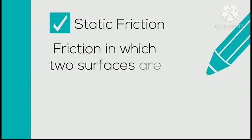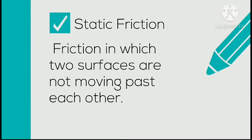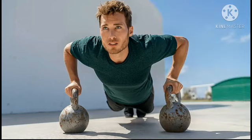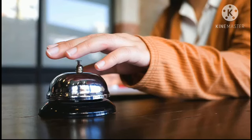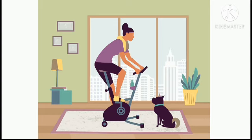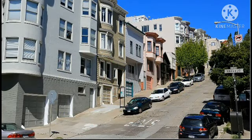Static friction is the friction that occurs between the surfaces of non-moving objects. You see these door barriers on the ground — they are not moving, so they have static friction. The bell on the table is not moving, so it has static friction. The gym machine has static friction because it is not moving from its position. A parked car also has static friction.